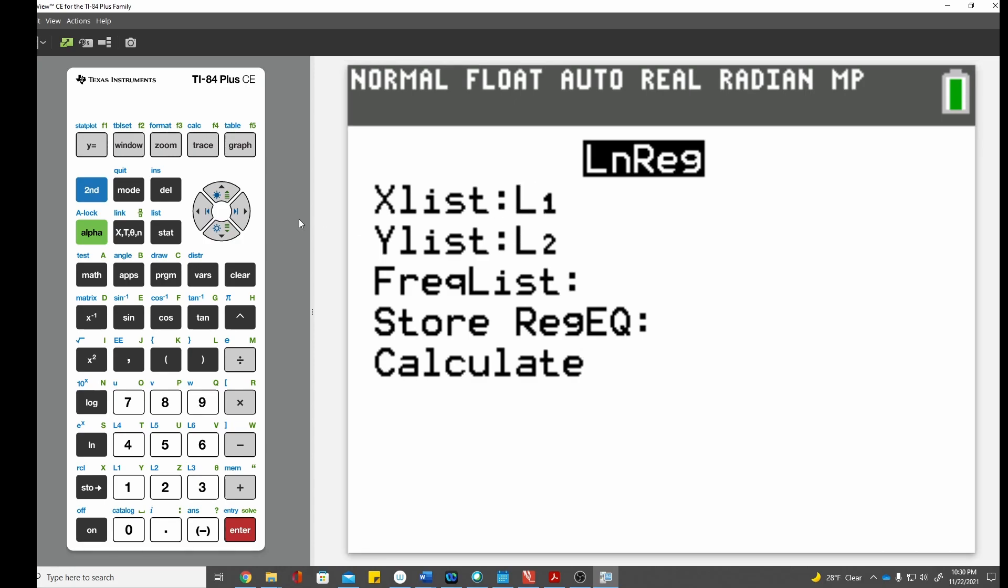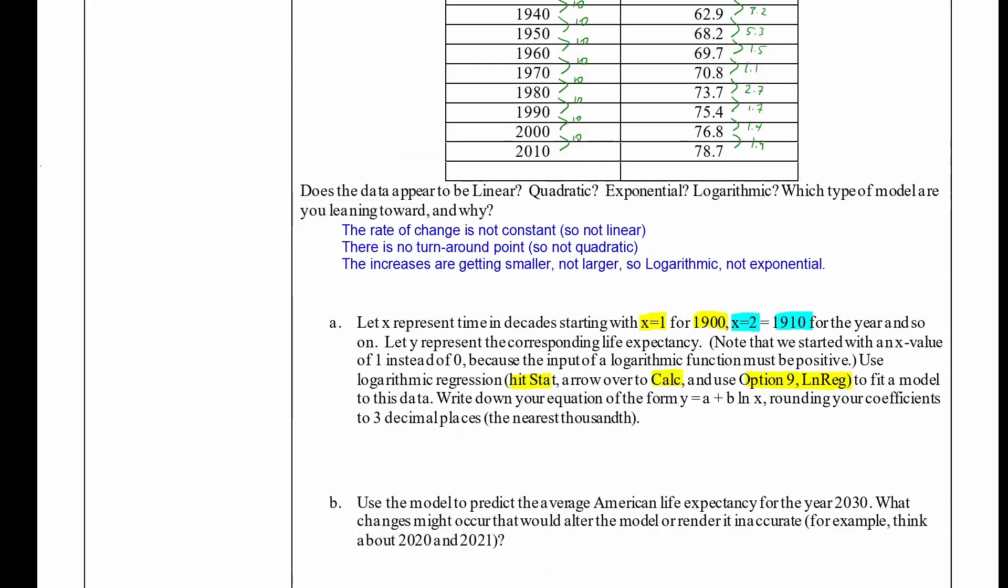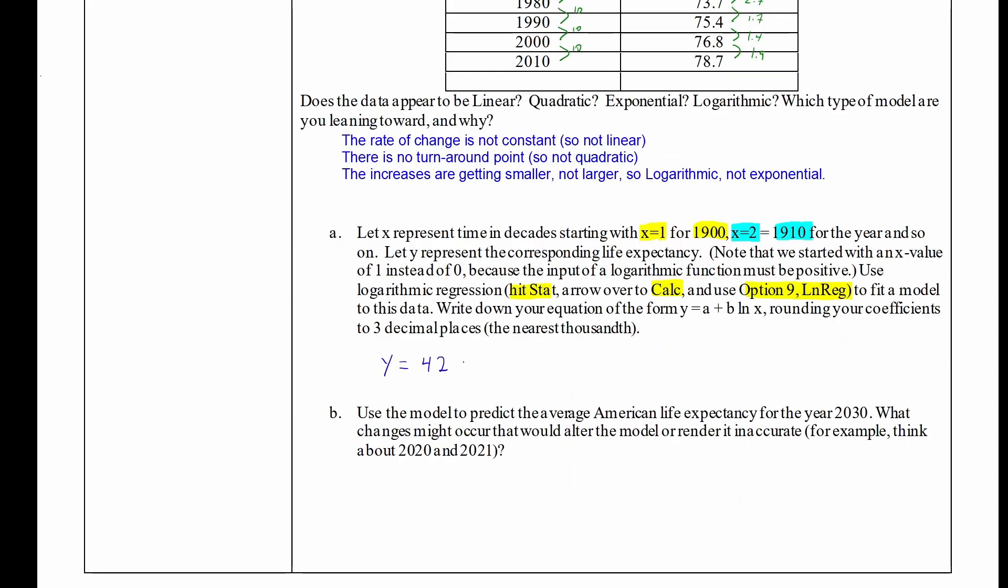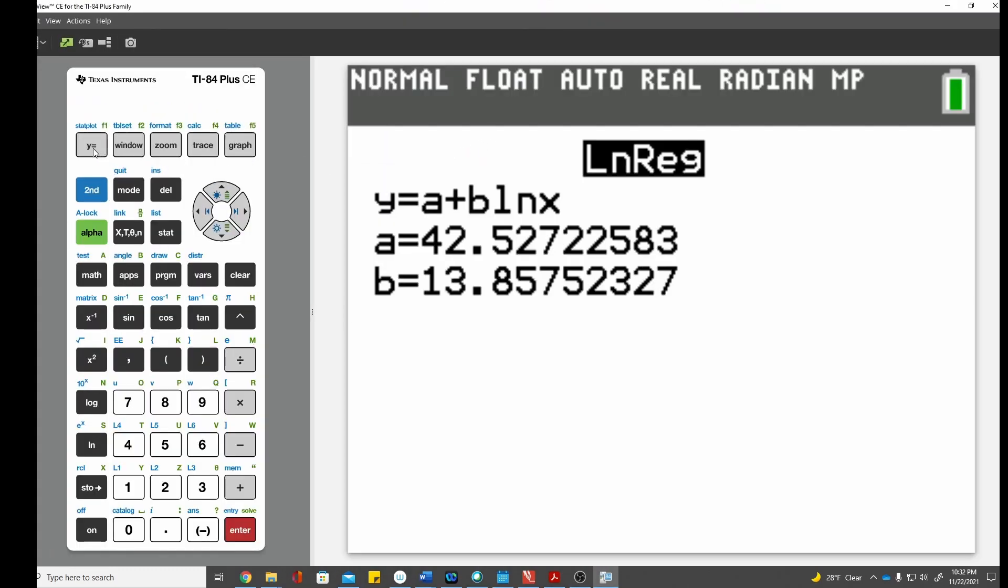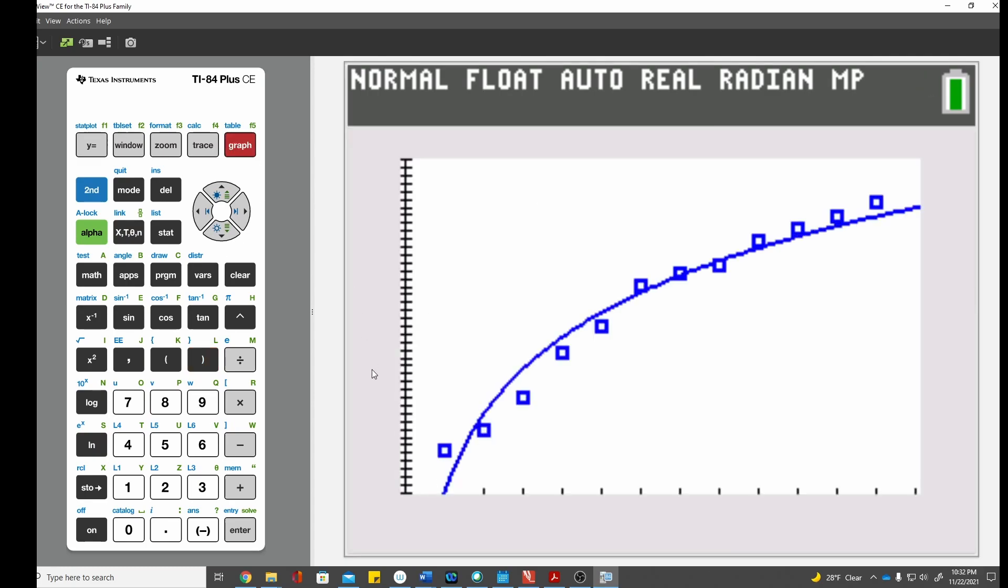My x data is in L1, my y data is in L2, and we can just go down and hit calculate. And that gives us the equation y equals a plus b times natural log of x, where it gives us the numbers for a and b. So let's go ahead and write that down. So using three decimal places, we'll get y equals 42.527 plus 13.858, when I round, times natural log of x. On my calculator, if I enter that as a y equals equation, 42.527 plus 13.858 times natural log of x, and I press the graph button, it will draw the logarithmic model that I created through my scatter plot. And I can see that that's a pretty good fit.